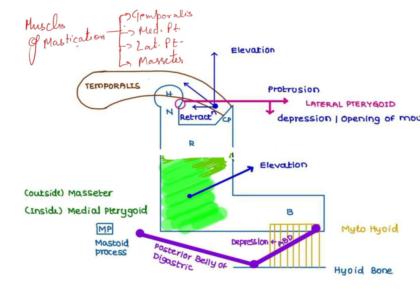The main thing here is the function of all these muscles. First, you can see the temporalis muscle — I've shaded the whole area of it. Try to understand the vector here; the middle one represents the direction of pull of this particular muscle. That can be broken down into two components: one is going upward, which is called elevation, and the other is going toward the back, which is retraction.